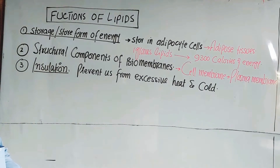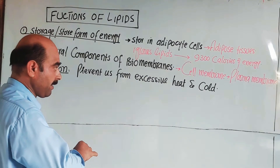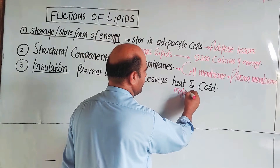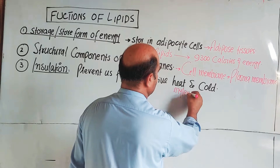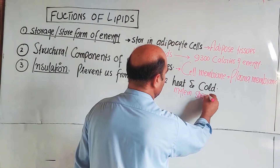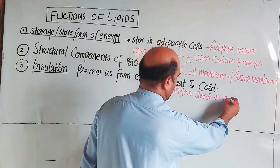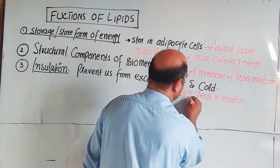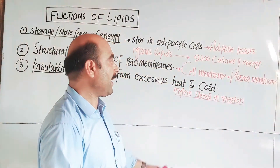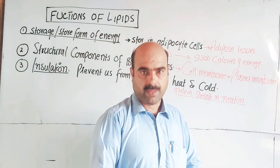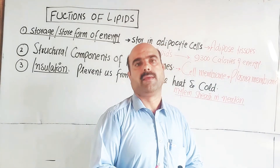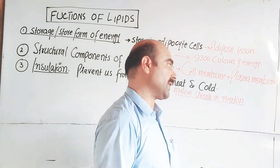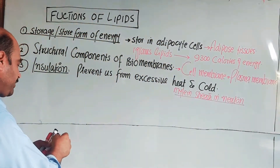Insulation is provided by the myelin sheath in neurons. The myelin sheath wraps around neurons and acts as an insulator, preventing heat, cold, or electrical signals from leaking in or out of the neuron. The myelin sheath in neurons is a key insulating structure.